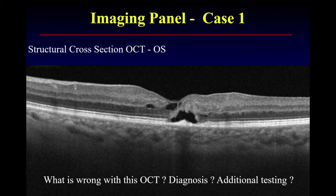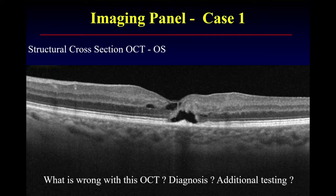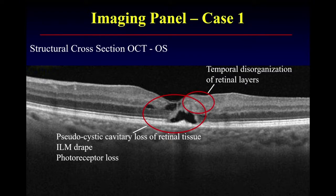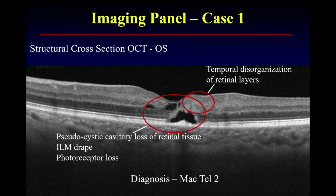And then you have this outer retinal cavity, which is on the temporal aspect of the fovea. This is pretty characteristic for macular telangiectasia type 2, though conditions such as tamoxifen maculopathy can have a similar appearance. I would routinely perform OCT angiography, which gives us the pathognomonic tangled deranged vessels located just temporal to the fovea, and I would imagine those are present in this case.